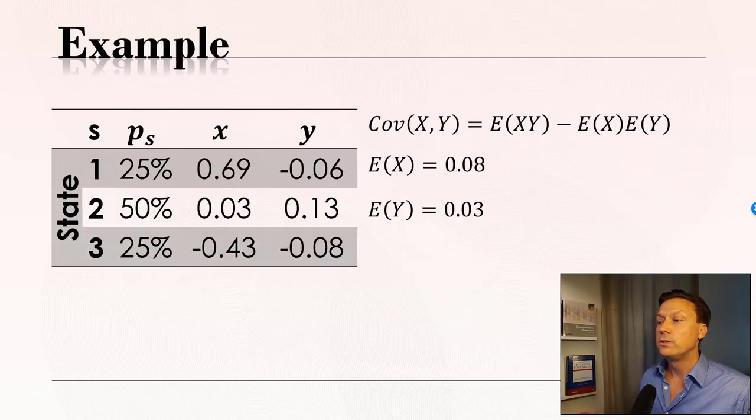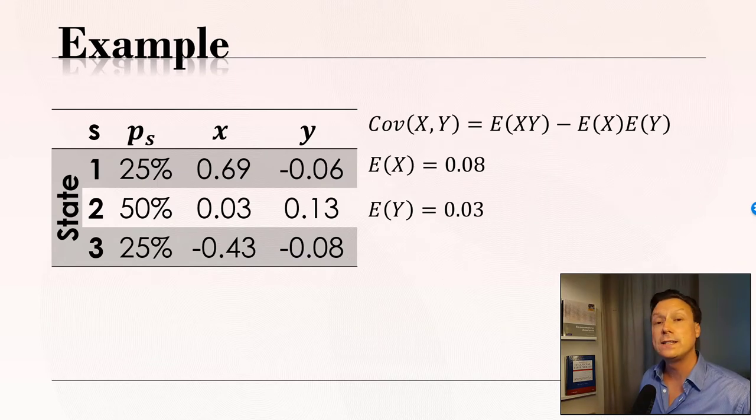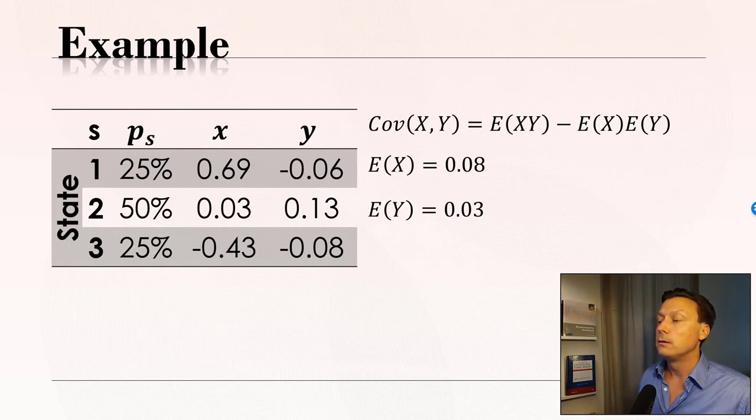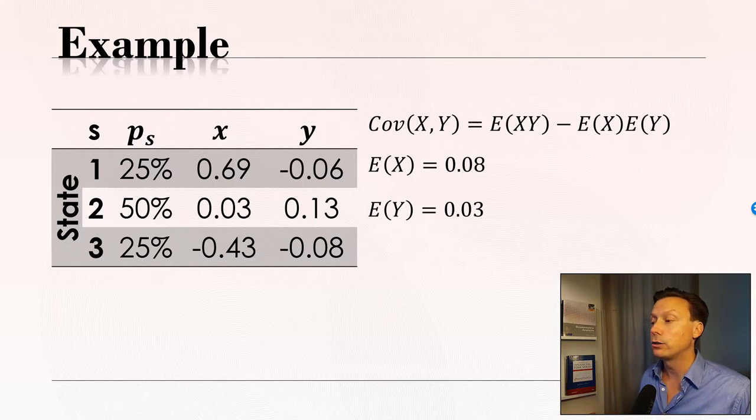Let's revisit portfolio X where we have three states in the world. We know which probability each is going to occur and we know the outcome. The only difference now is that I'm going to add another portfolio Y which is going to have a different return. Portfolio Y is going to have a negative return in the first state, a 13% return in the second state, and it's going to lose 8% if the third state occurs.